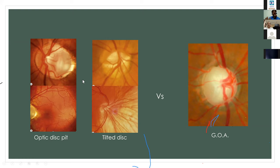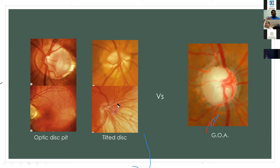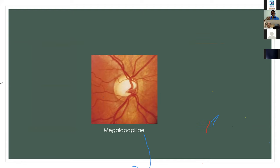Tilted disc is mainly seen in high myopes; the refractive status and patient's vision provide clues. In tilted discs, the superotemporal portion of the disc is elevated more and the inferonasal part is shifted posteriorly due to oblique insertion of the optic nerve, with corresponding inferonasal retinal hypopigmentation.